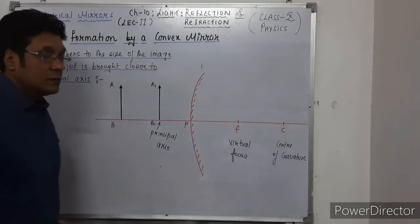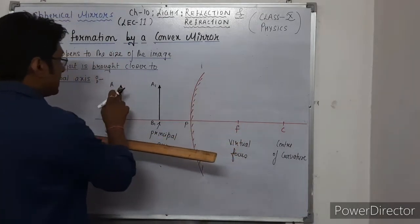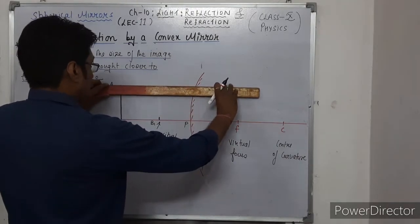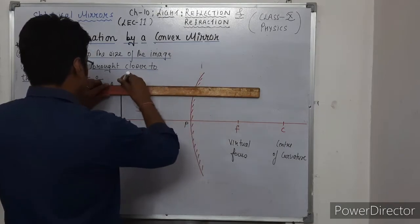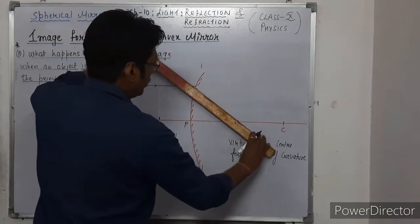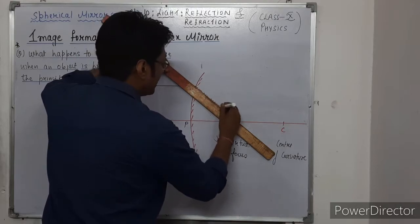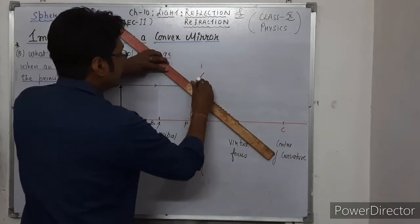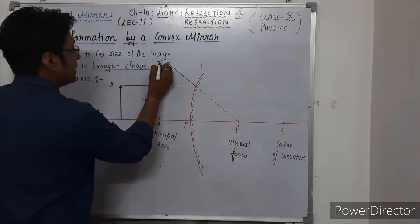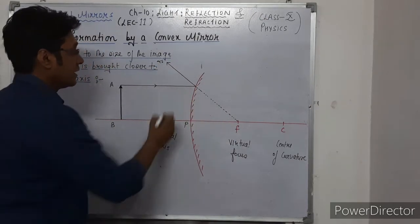Let's observe the image formation. Any ray which is coming parallel to the principal axis — this ray diverges as if it is coming from the focus (behind the surface, which is polished). This is the reflected ray.